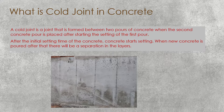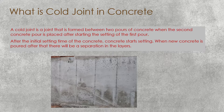A Cold Joint is a weak joint formed within two concrete pours. When the second concrete pour is laid over the first concrete pour after the first concrete pour has started its setting, Cold Joints are formed. In simple terms, if you pour concrete onto existing concrete that has already started to harden, there will be a formation of a Cold Joint. Therefore, you must lay the fresh concrete before the previous concrete pour starts hardening.